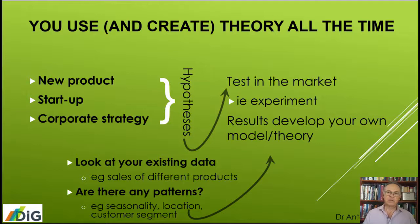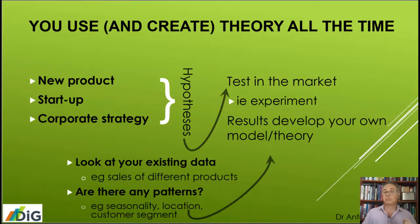Even well-established models can fail, because again, probabilities might be right 95 or 99% of the time — but not always. Learn and adapt.